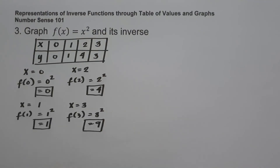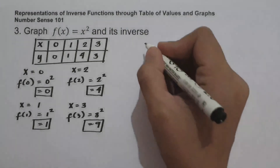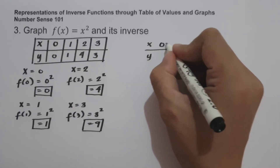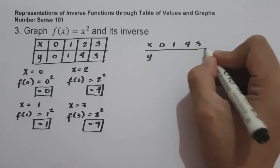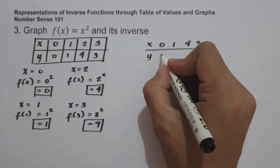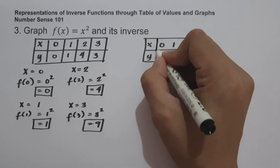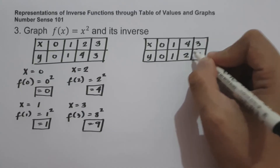Before we plot this set of ordered pairs, let us find first the set of ordered pairs of the inverse function by interchanging x and y values. The x values of the original function become the y values of the inverse, and the y values of the original function become the x values of the inverse. Let us construct another table of values. The x values are 0, 1, 4, and 9, and the y values are 0, 1, 2, and 3. So the set of ordered pairs of the inverse function is: 0 and 0, 1 and 1, 4 and 2, and 9 and 3.